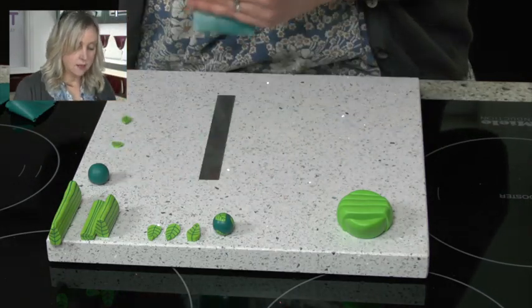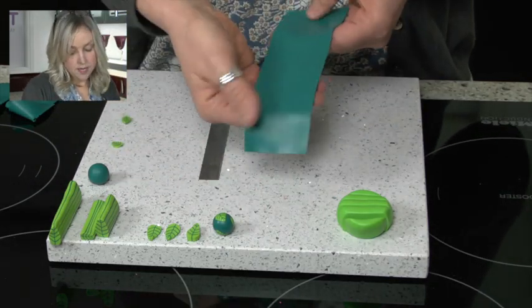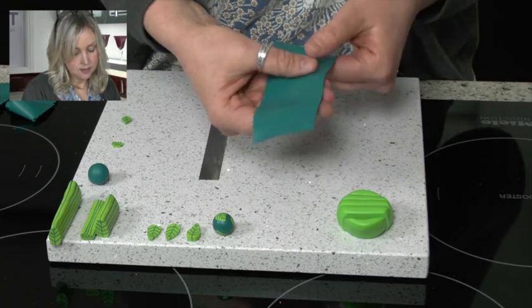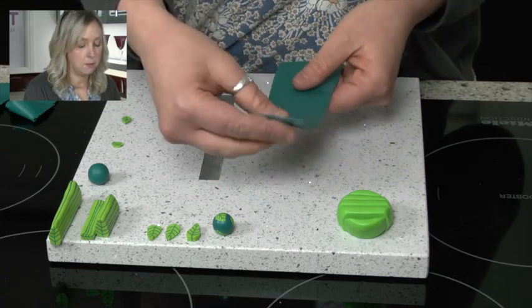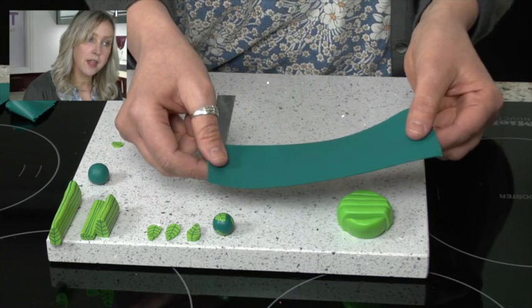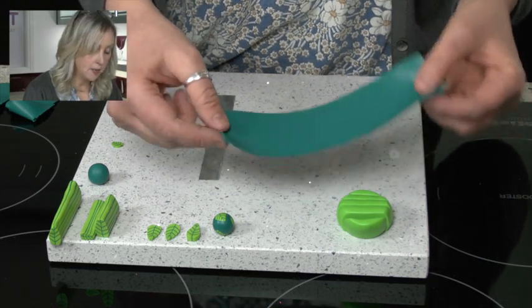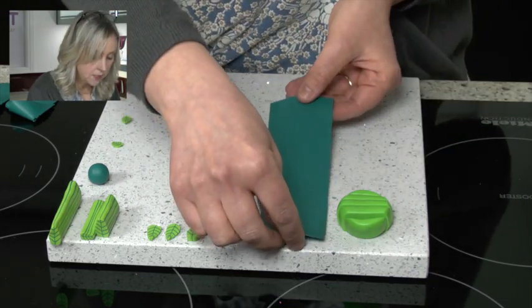And I've taken some darker green clay, it's more like a tealy color actually, like a bluey green. And I've rolled that quite thinly through the pasta machine or with a roller, but it's quite thin.